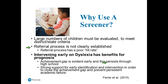The third reason is probably the most important: intervening early on dyslexia specifically has benefits for prognosis. We know there's a huge achievement gap that starts in early education, and it persists all the way through high school if children are not addressed early enough. There's a lot of support for identifying dyslexia early enough and intervening in order to close that achievement gap.